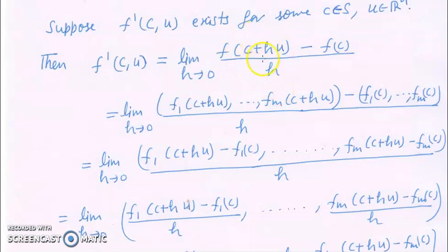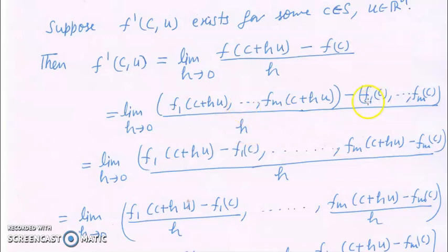Now, f(c + hu), because f has m components, can be written as (f1(c + hu), ..., fm(c + hu)), and f(c) can be written as (f1(c), f2(c), ..., fm(c)), all divided by h. We can do coordinate-wise addition for these two vectors, giving us (f1(c+hu) - f1(c), ..., fm(c+hu) - fm(c)) / h.